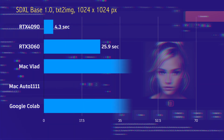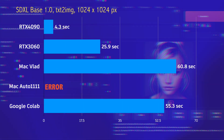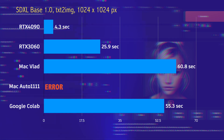With the SDXL model, the RTX 4090 performs as well as ever. However, the 3060 and Google Colab seem to struggle. Mac VLAD performs slightly better than with the high-res fix, while Automatic1111 on the Mac is throwing an error — so maybe SDXL doesn't work with Automatic1111 on a Mac yet, or maybe it's just an issue with my configuration, even though I've installed the latest version. If you've got an idea, please let me know.